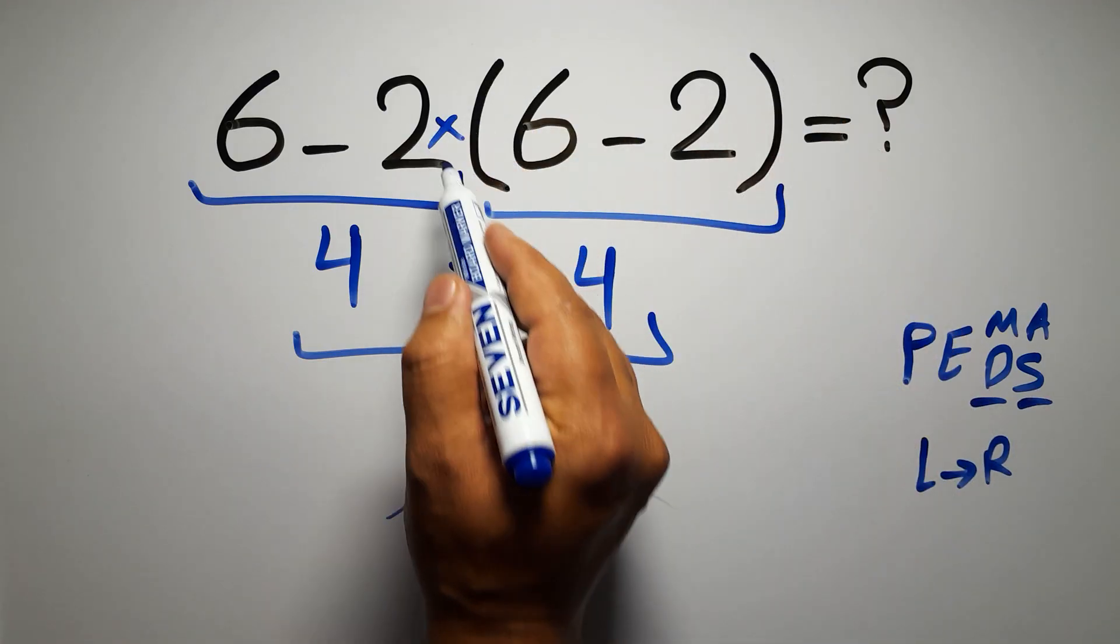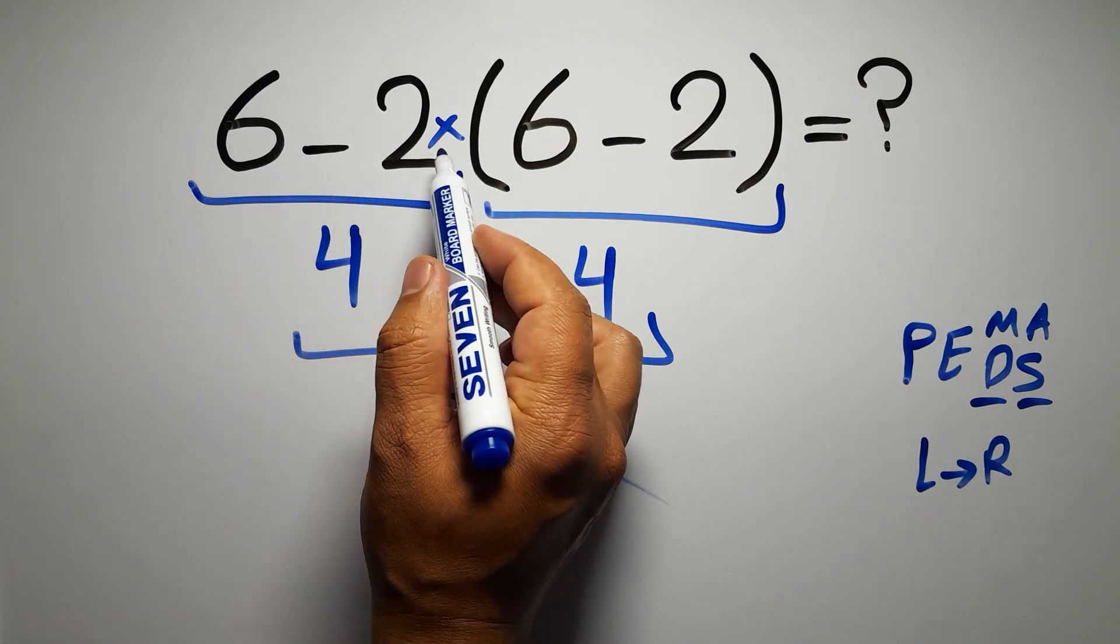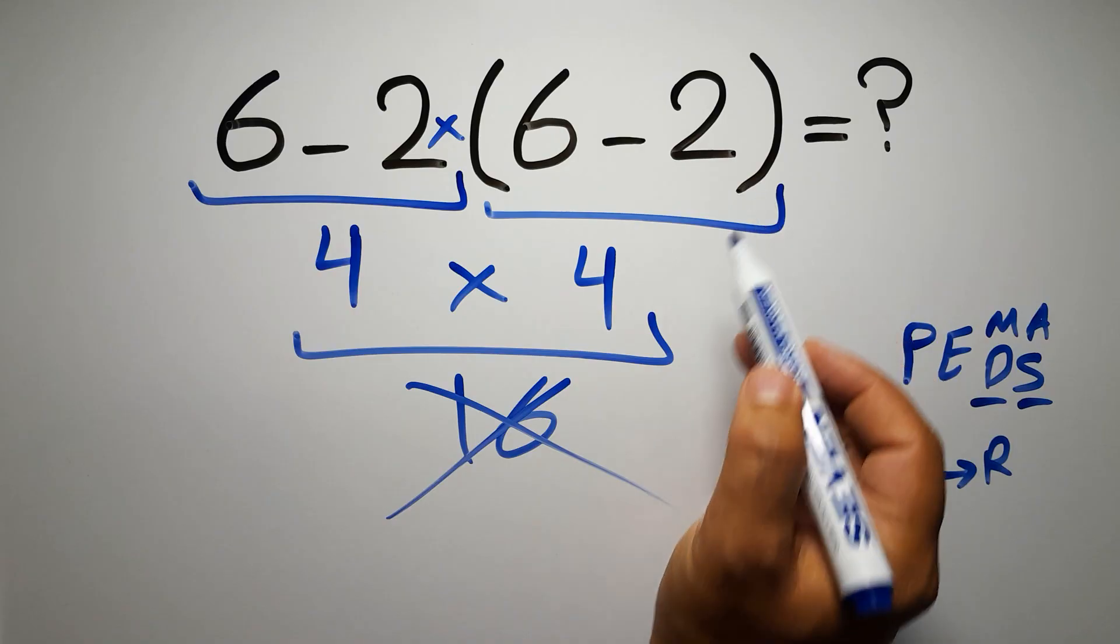So according to PEMDAS, first we have to do this parentheses, then this multiplication, and finally this subtraction. If we do this subtraction before this multiplication or this parentheses, it is wrong.